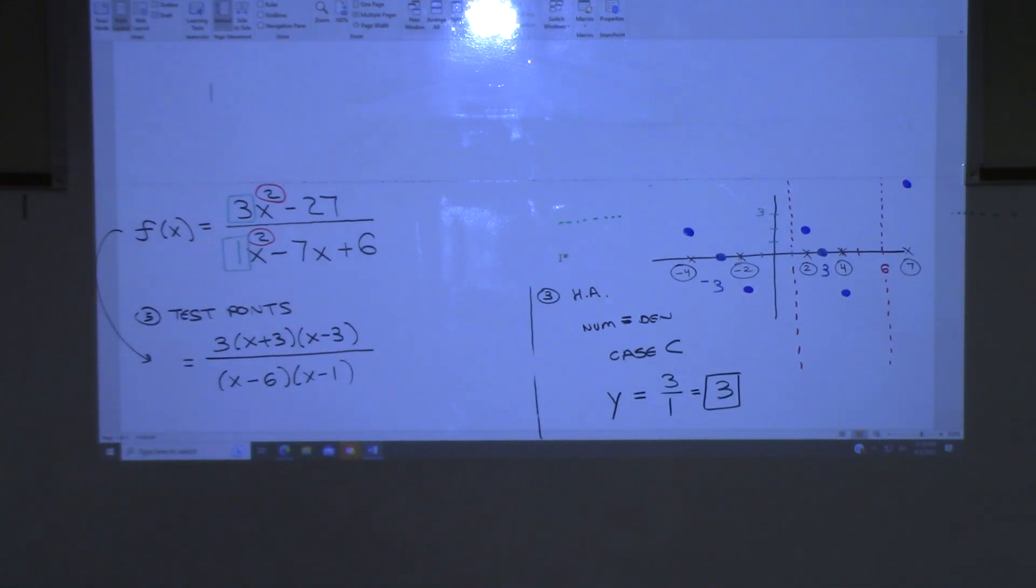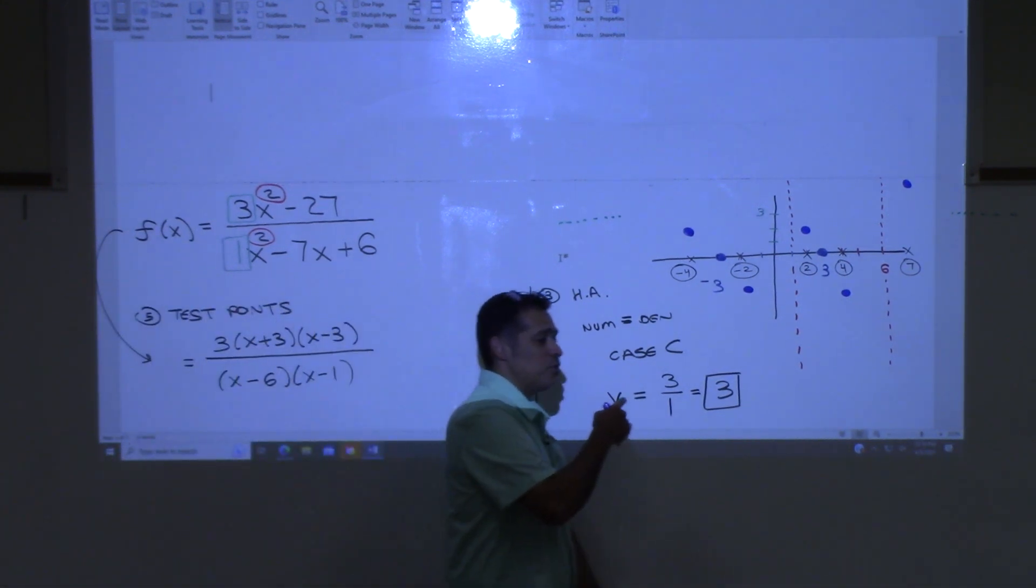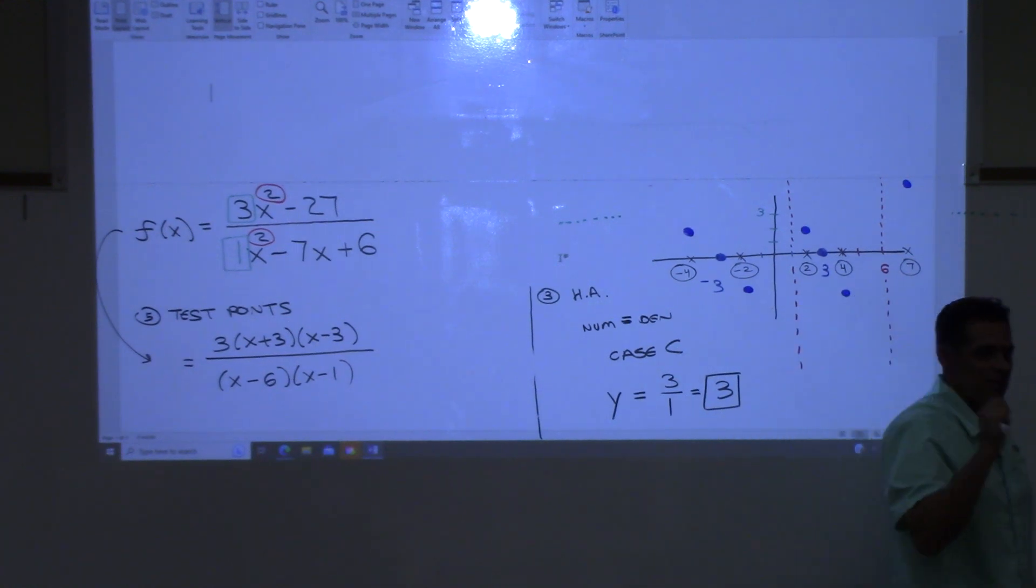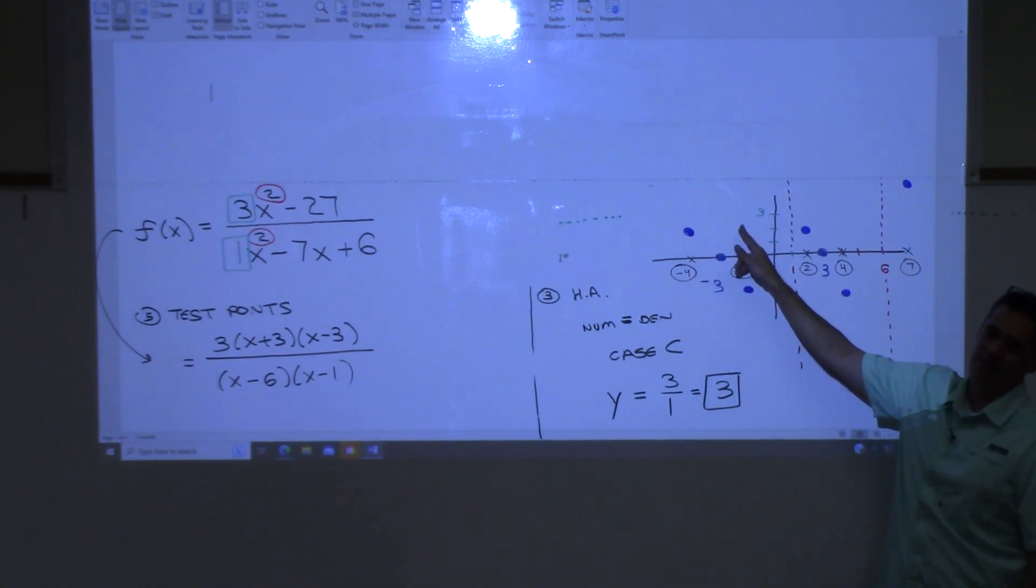All right, now, do you all notice a pattern? We found the first one. It was what? Positive. What was the next one? Then? Then? Then? Okay. Do you think it's going to always be that way? No, it's not. Sorry. So you can't just find the first one and then make all the others switch. You have to check each one because sometimes it goes like positive, positive, then negative, then positive, right? So you have to check them, unfortunately.